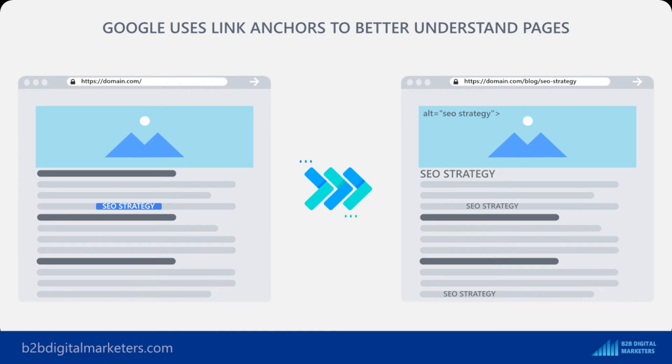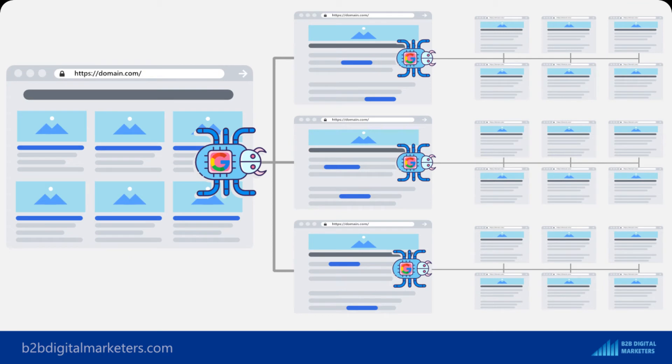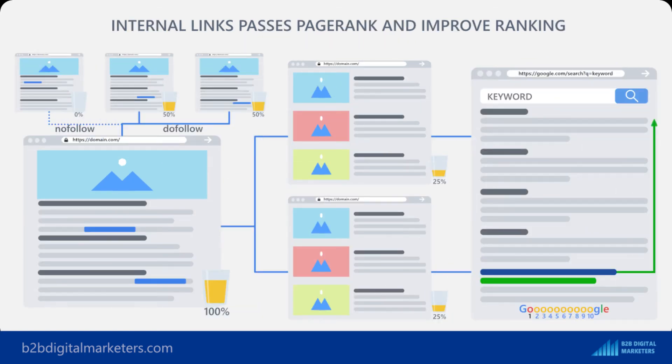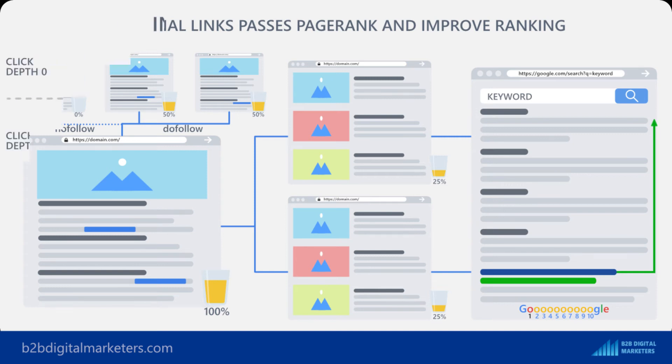The ninth important practice is to ensure you spend time on your internal linking strategy. Internal links are very important for SEO and unfortunately many marketers skip on these, which is a huge mistake. Google uses internal links and anchor tags to get a better understanding of your content. Internal links are the number one way Google discovers your website and the entire internet by crawling links on your web pages. Search engines use internal links to understand the importance of a page — the more internal pages linking to a particular page, the more authority Google gives it. With internal links you can spread page rank to prominent pages that don't get as many backlinks, and they help lower your click depth, which signals page importance to search engines.